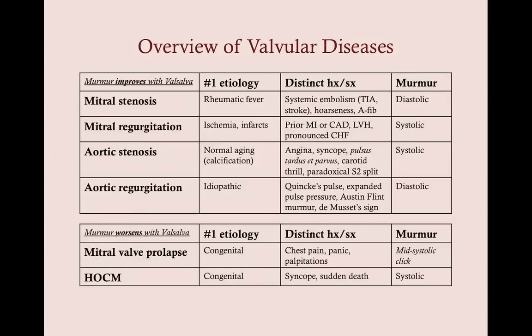The four major valvular diseases are mitral stenosis, mitral regurgitation, aortic stenosis, and aortic regurgitation — called the four major ones because each can require surgery. Mitral stenosis: number one etiology is rheumatic fever from a Group A beta-hemolytic streptococcal infection. Mitral regurgitation: number one etiology is ischemia and infarcts. Aortic stenosis: number one etiology is aging. Aortic regurgitation: number one etiology tends to be hypertension. We'll also discuss mitral valve prolapse and HOCM — both congenital valvular diseases.